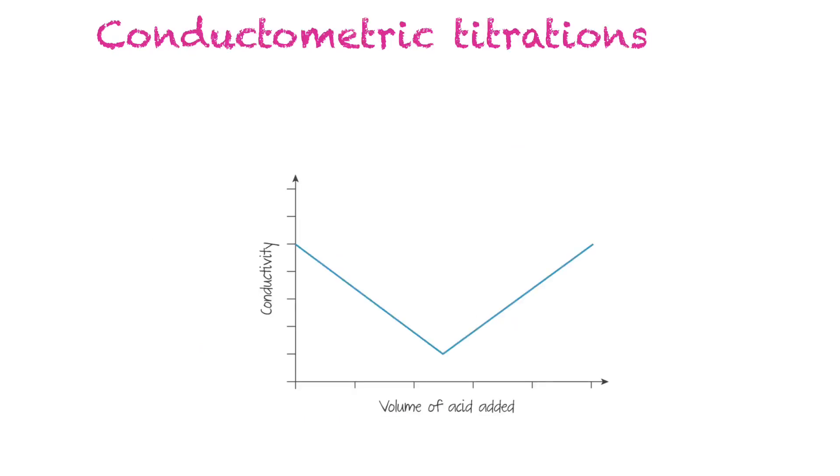There's one other type of titration that you can undergo, and those are known as conductometric titrations. In this case, instead of using the pH meter or an acid base indicator, you would follow the conductivity over the course of the reaction. Initially, when you had your base alone, you would have high conductivity.